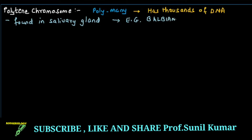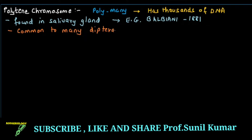In whose salivary gland is it found? It is common to many dipterans — those insects which have two wings. So we can say two-winged flies are dipterans. In polytene chromosomes, continuous replication takes place.